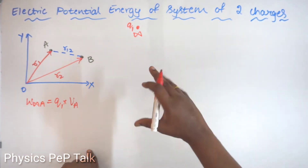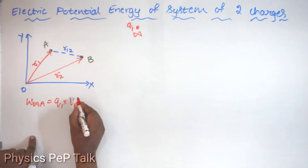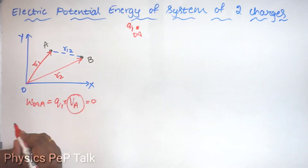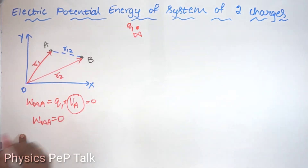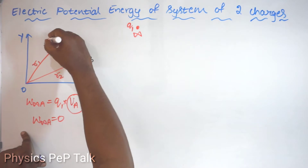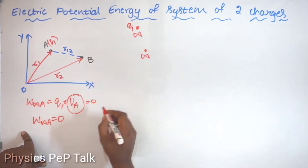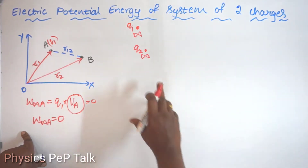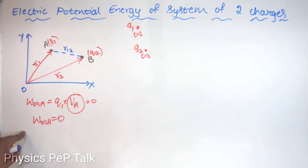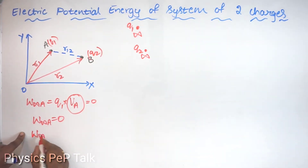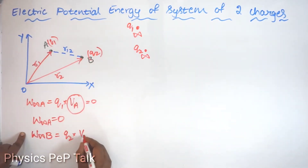There will be no electric field initially since no charge is in the system. Without an electric field, the electric potential in the system will be zero. As a result, the work done in bringing a charge from infinite distance to point A will be zero. Now I have brought charge Q1 to point A. Similarly, I will bring another charge, Q2, which is also at infinite distance. I will bring this charge from infinite distance to point B. I have to do some work; I will call that work as the work done in bringing Q2 from infinity to point B, which is Q2 into the potential at point B.